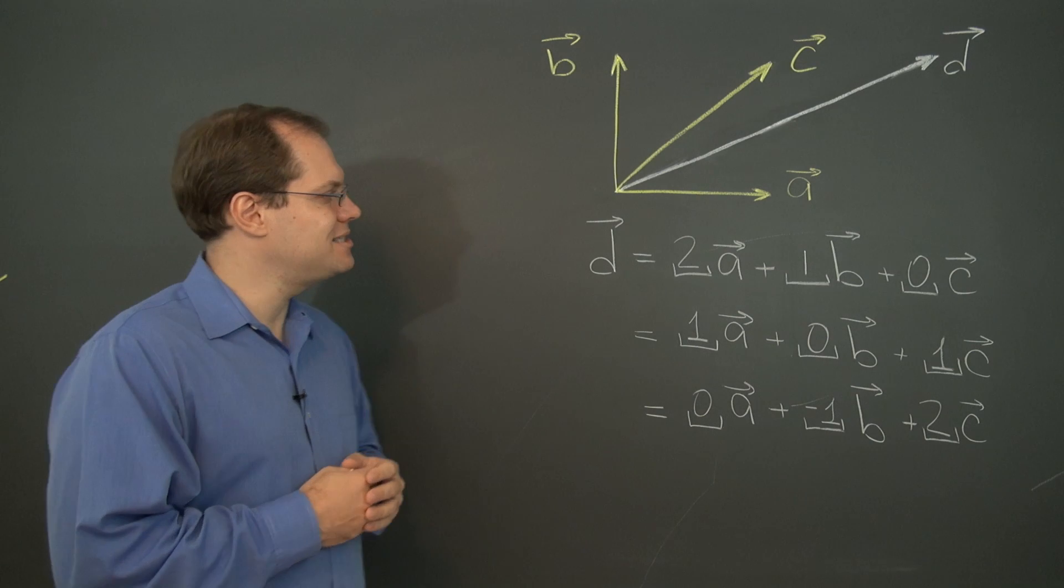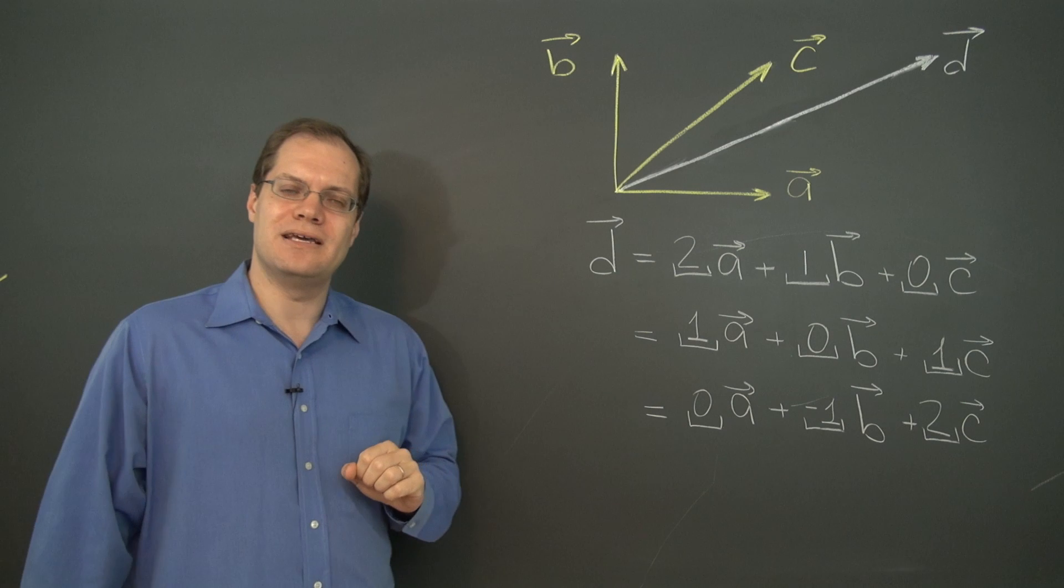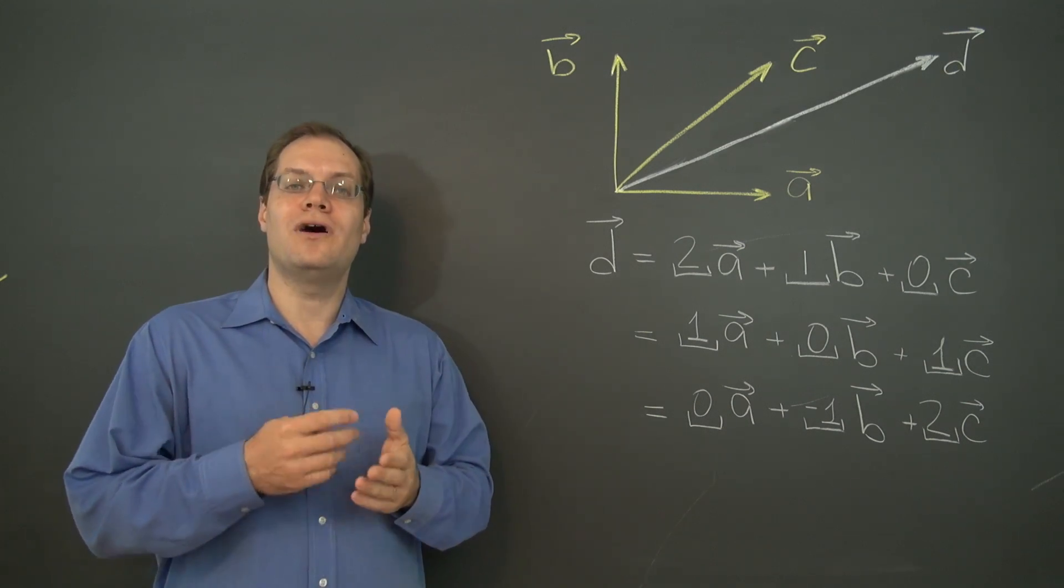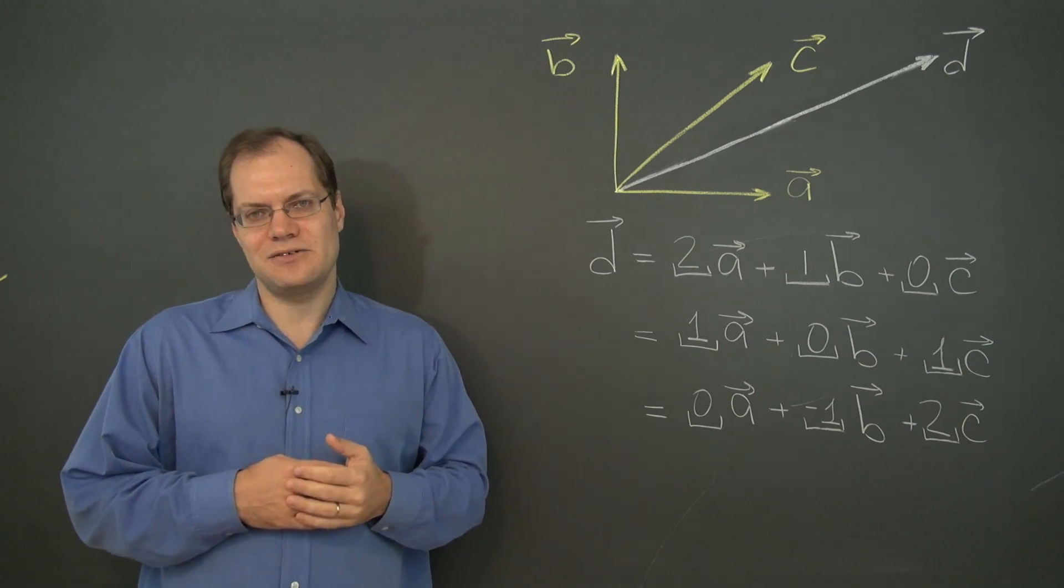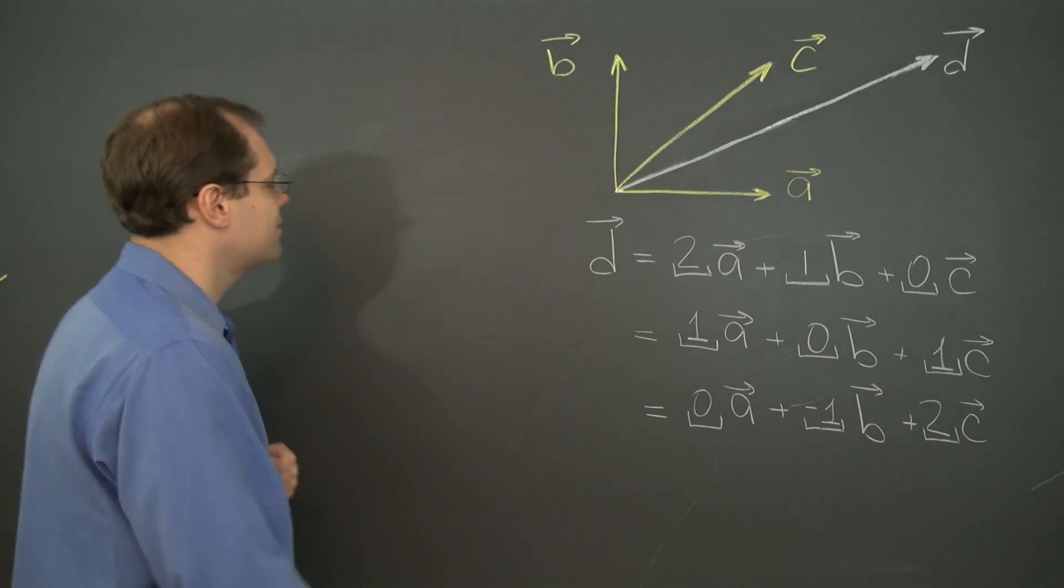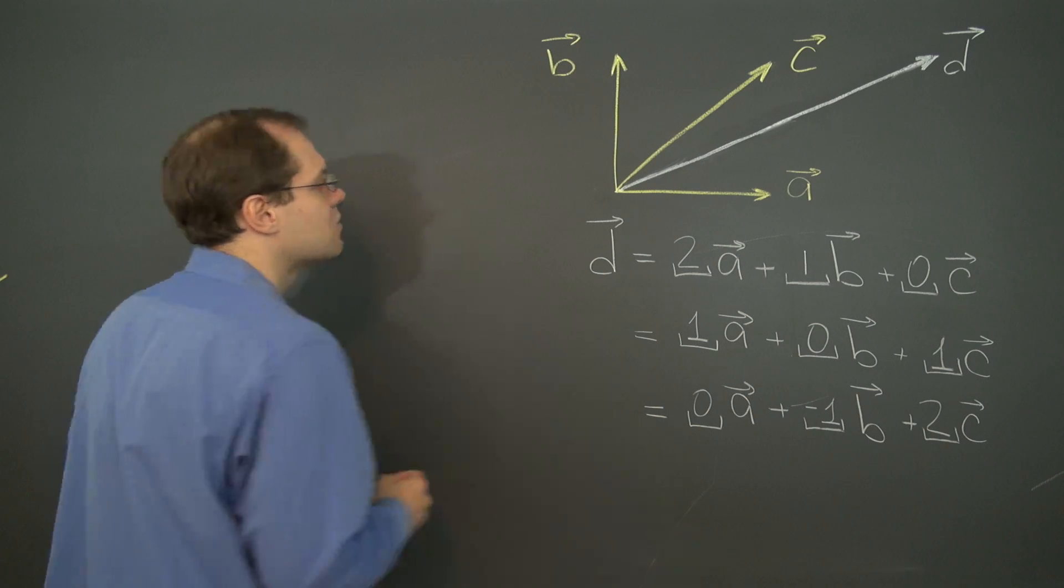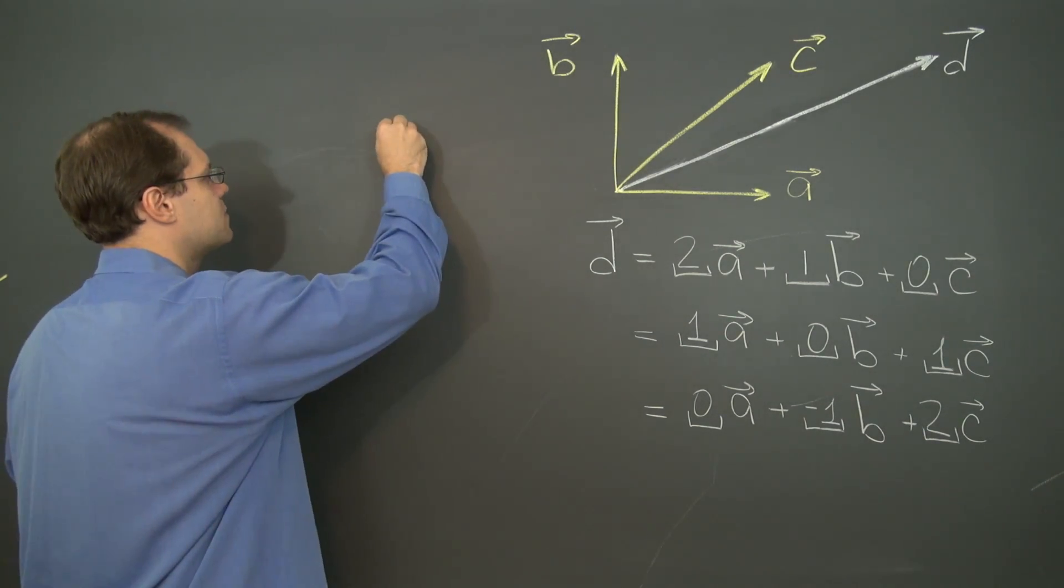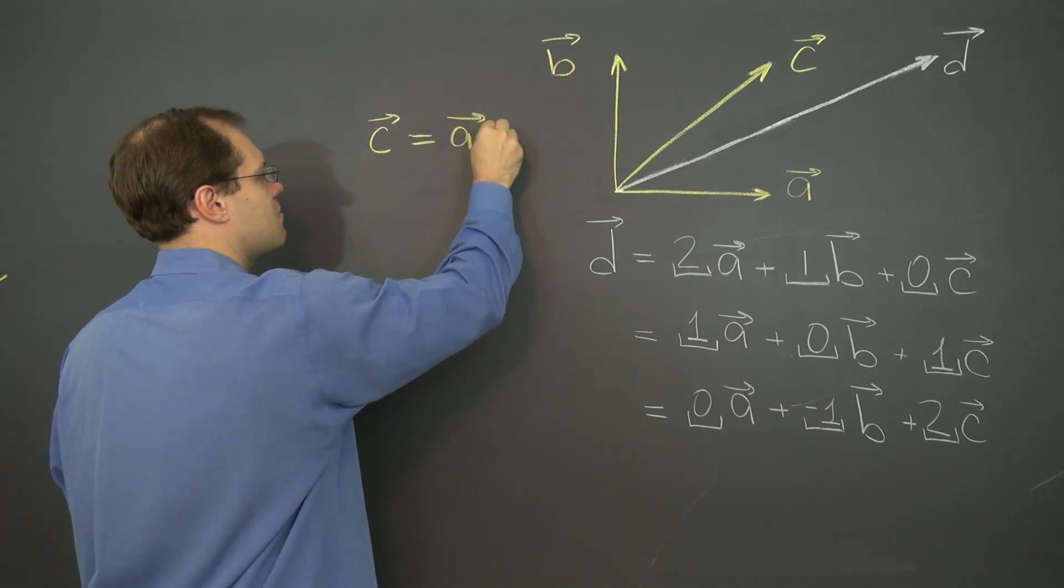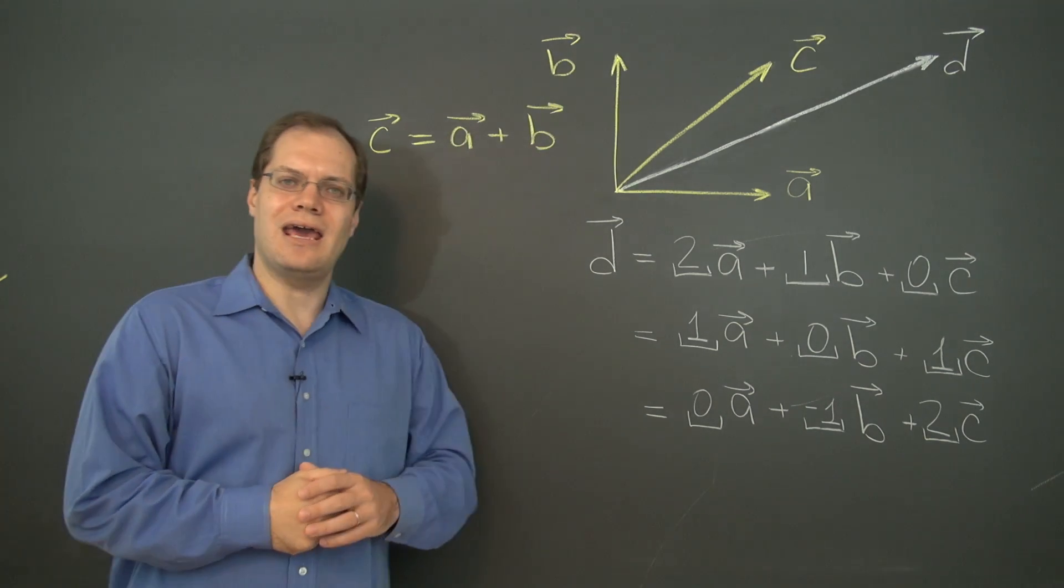Well, let me give you the reason as I see it. The reason is that there is a relationship between a, b, and c. They're not independent. One can be expressed as a linear combination of the other two. That's the relationship among them, and that relationship is c equals a plus b.